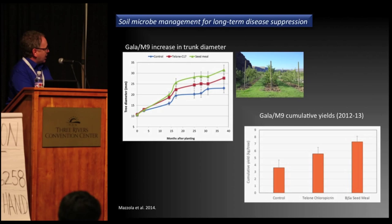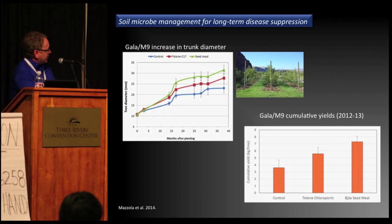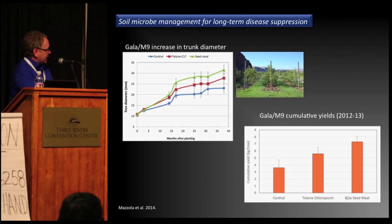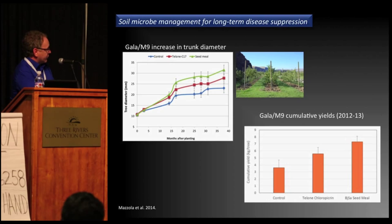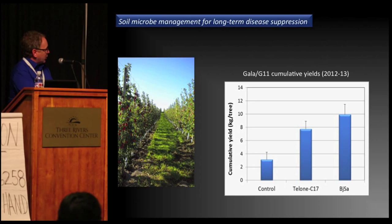Looking at growth of Gala on M9: the red line is soil fumigation, blue is the untreated control, and yellow is seed meal. During the first growing season there's no difference between fumigation and seed meal. Looking at yield, the seed meal treatment resulted in approximately 23% higher yields relative to soil fumigation. For Gala on G11, we see about a 25% increase in yields relative to soil fumigation over the first two harvest seasons, though statistically there was no difference between seed meal and fumigation in tree growth.